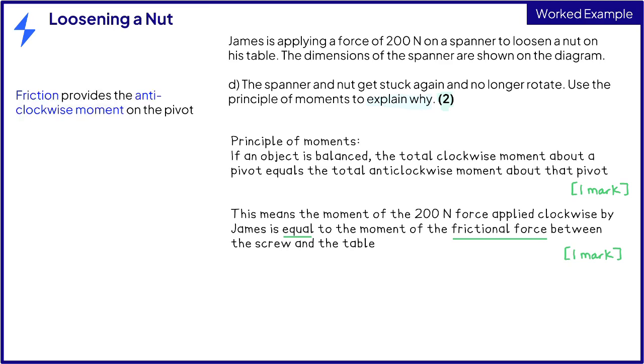No other forces are described on the diagram, so you need to consider what force is providing the anticlockwise moment. The nut is fastened into a table, so it must be the friction that provides the anticlockwise moment on the pivot, preventing the clockwise moment which James needs to move it.